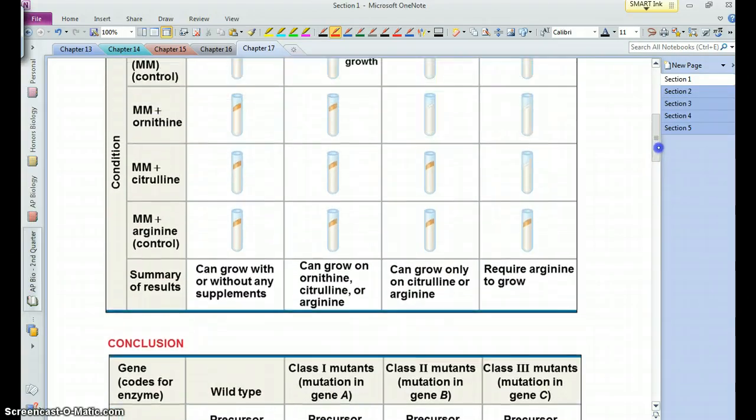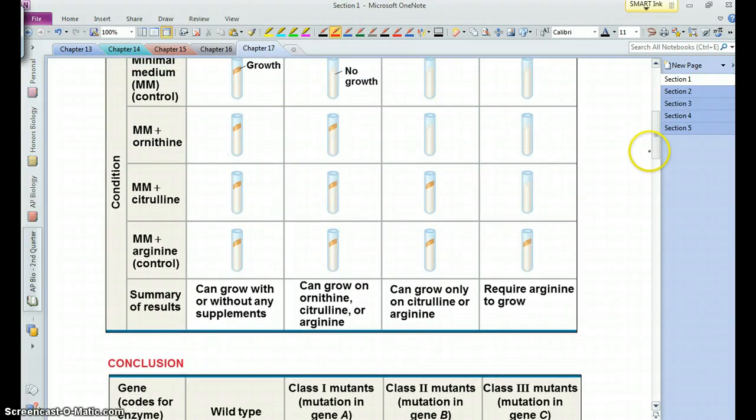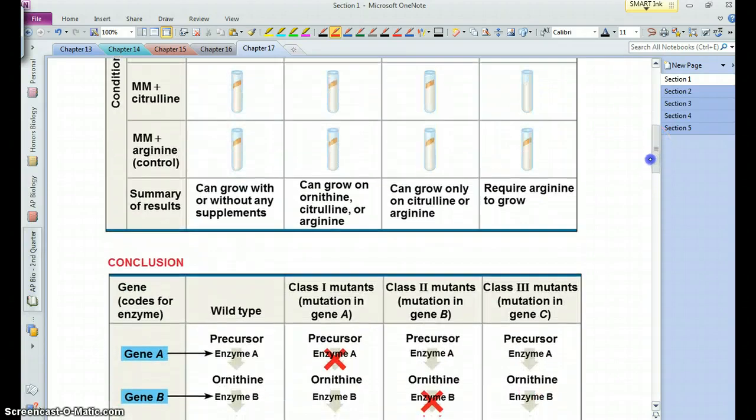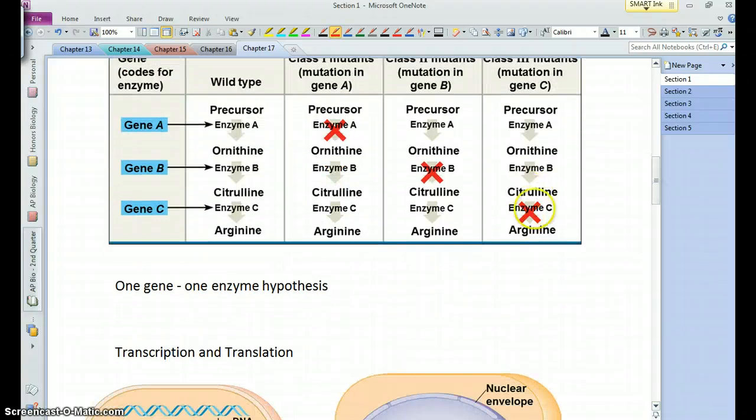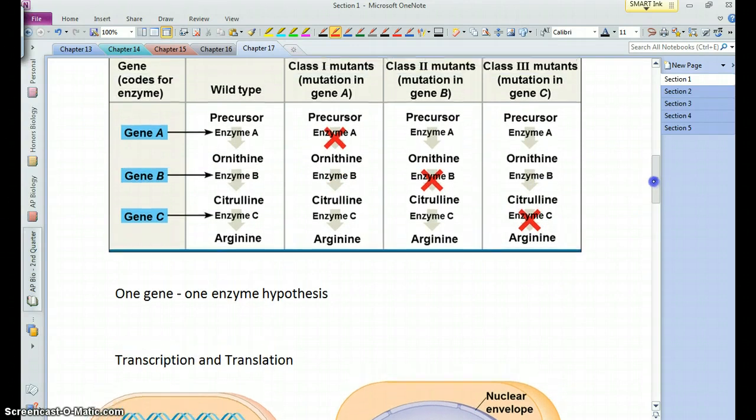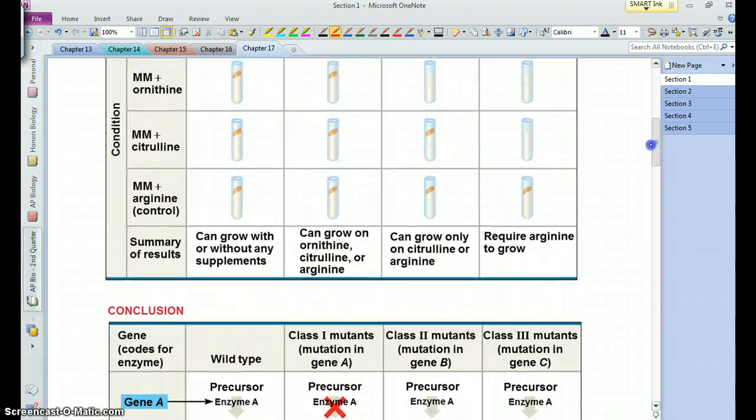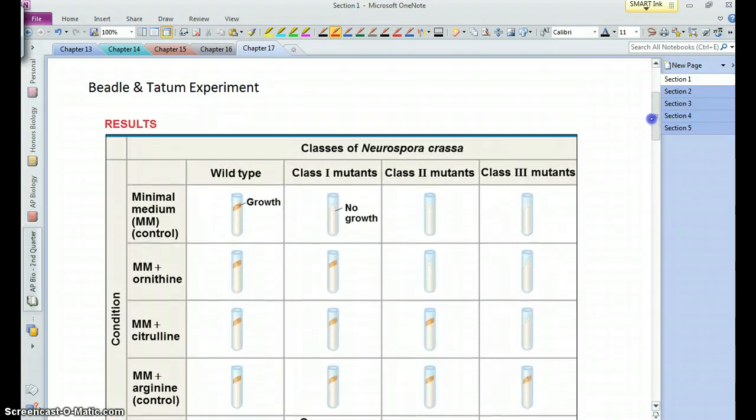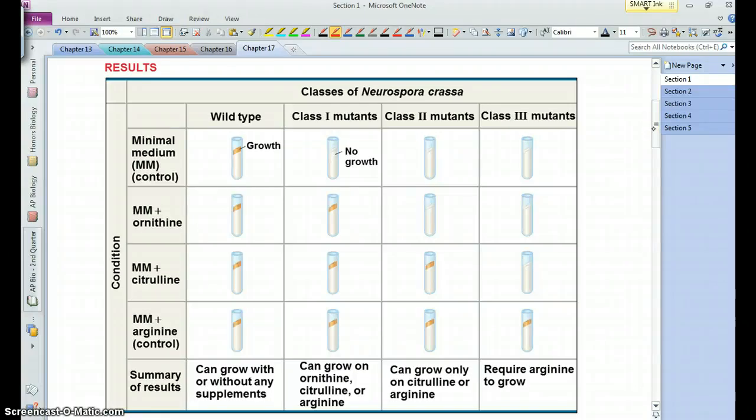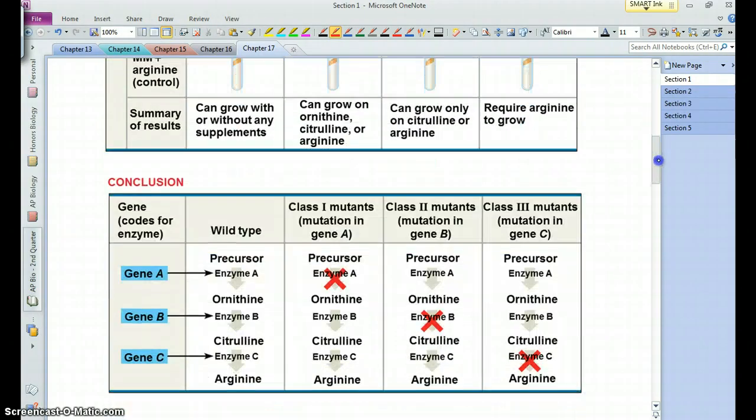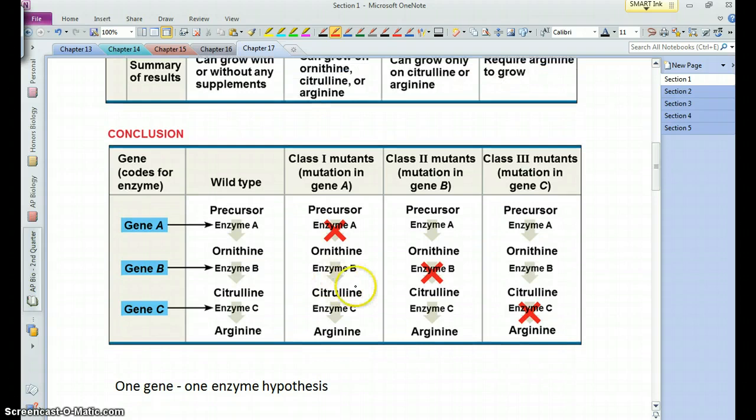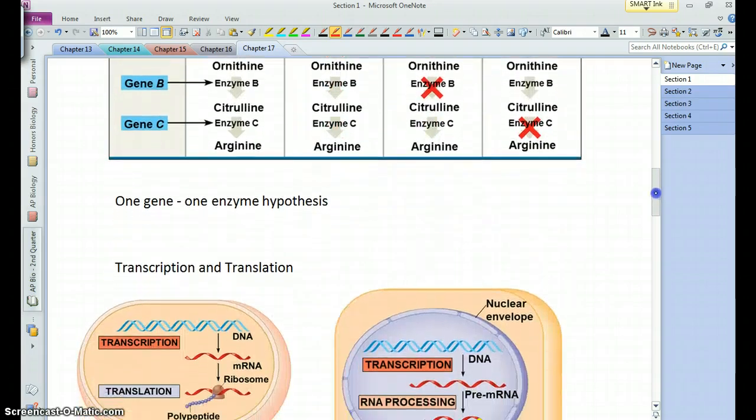And with class 3 mutants, if you provide them with citrulline, the other ones do all right but they don't because they can't convert it into the arginine. So essentially these different mutant strains have defective particular genes that are responsible for making the enzymes that allow them to carry out this biochemical pathway.